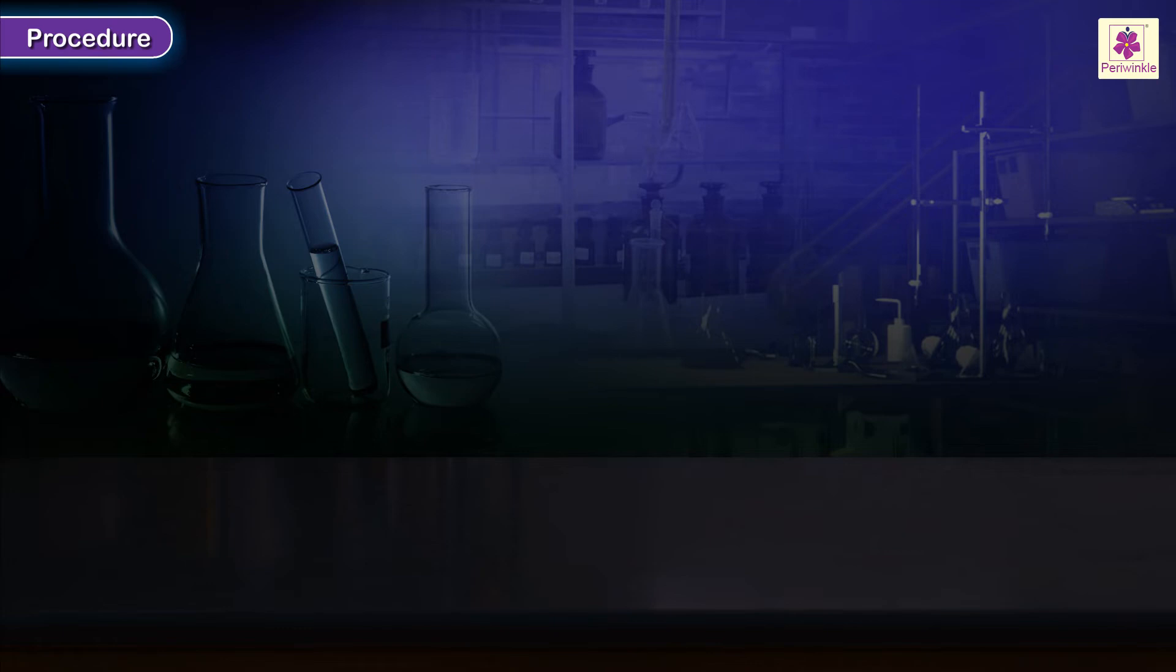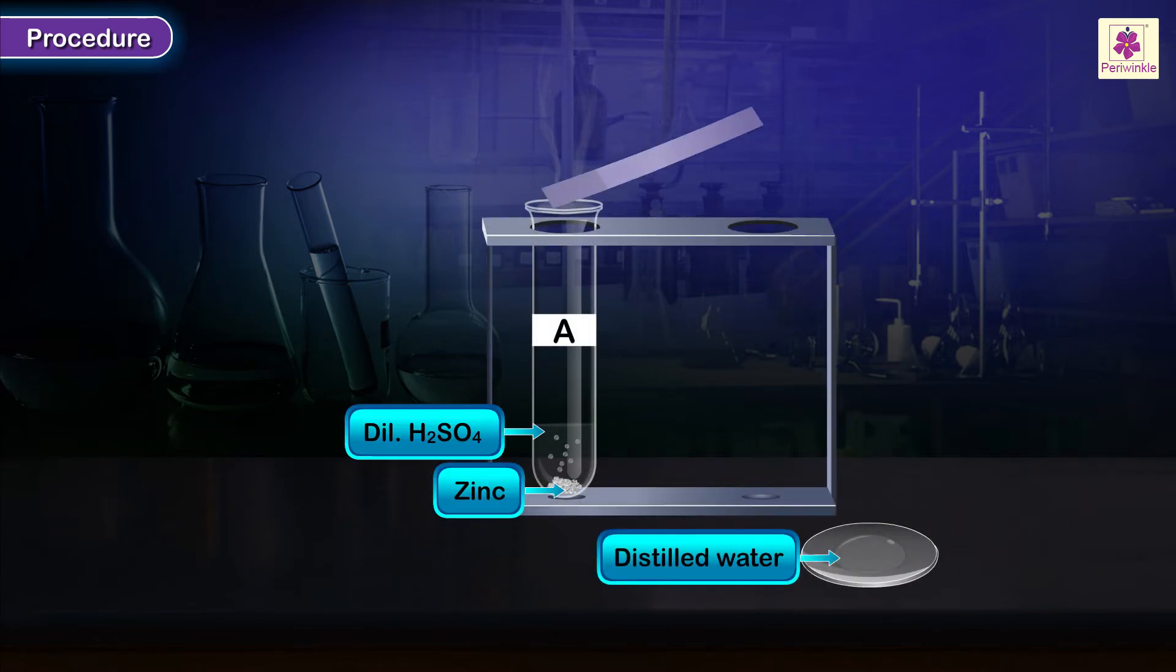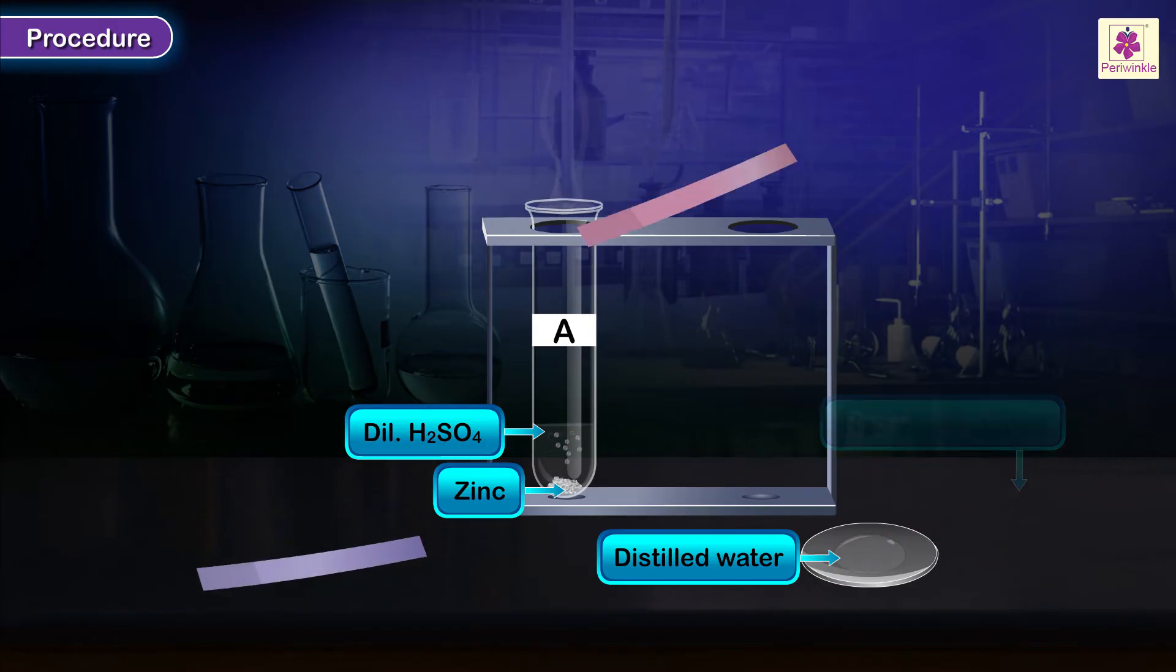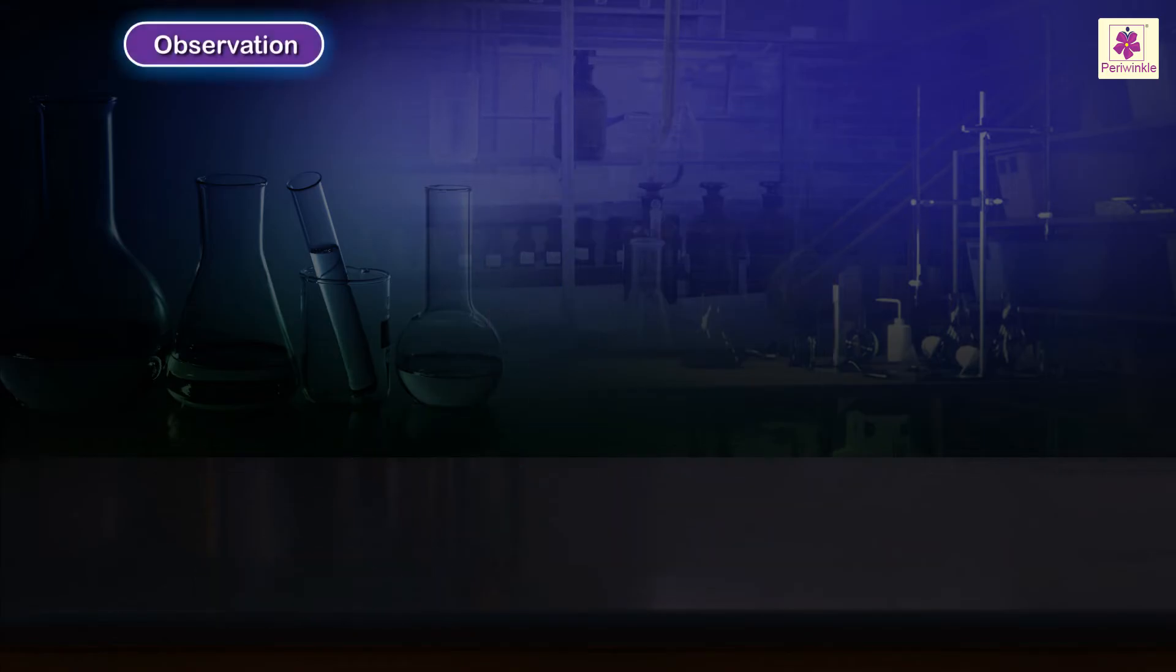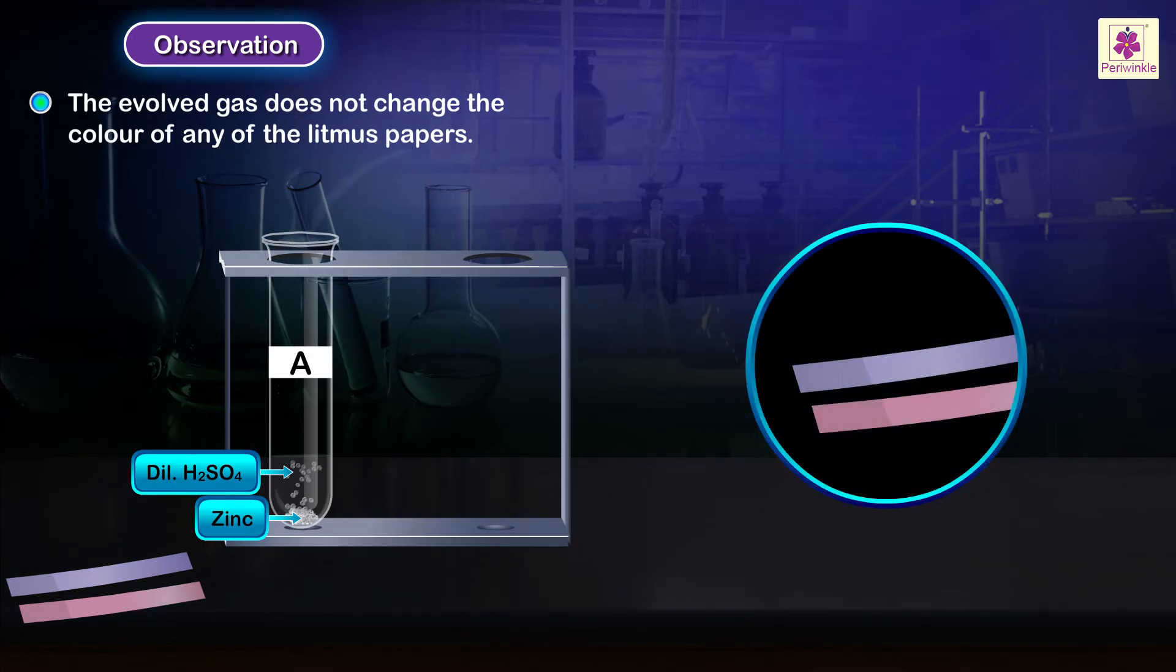Procedure: When the gas evolves in the test tube, hold blue and red litmus papers moistened with distilled water at its mouth. Observation: The evolved gas does not change the color of any of the litmus papers. Inference: The gas is neutral.